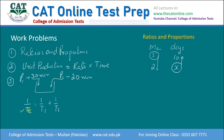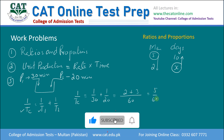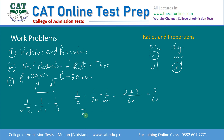Tc = combined time, T1 = एक pipe का time, T2 = दूसरे का time। तो: 1 over Tc = 1 over 30 plus 1 over 20। LCM = 60, so 2 plus 3 = 5 over 60। Reciprocal लें: Tc = 60 over 5 = 12 minutes। यानि दोनों pipe चला दिए जाएं तो tank 12 minutes में fill हो जाएगा।